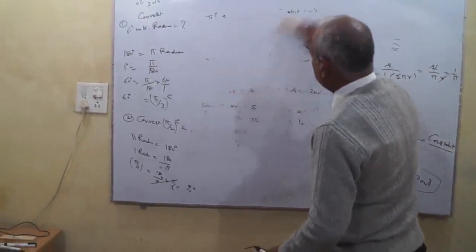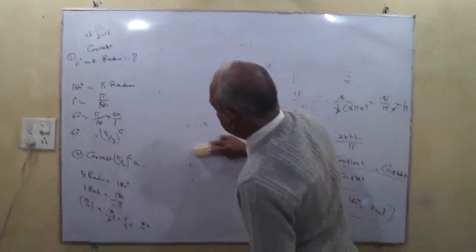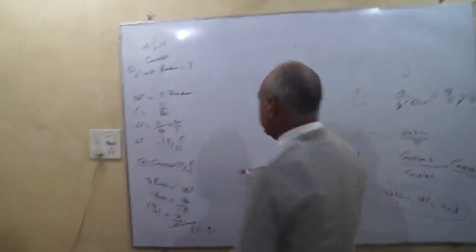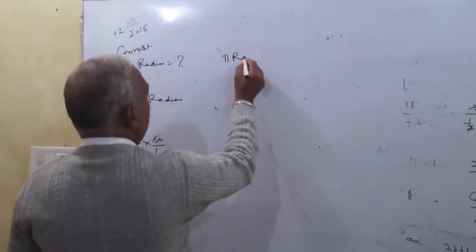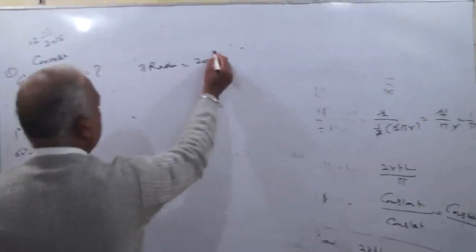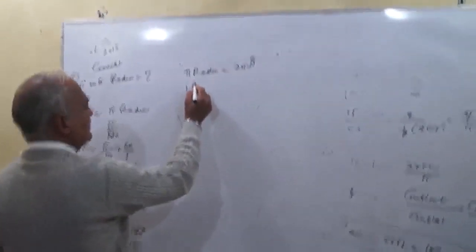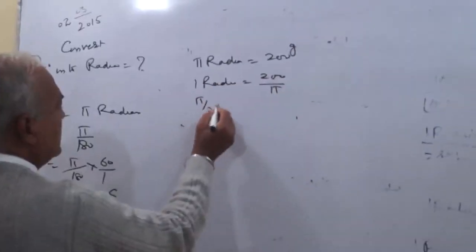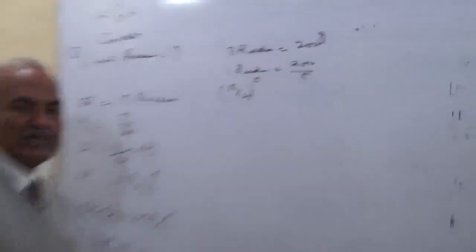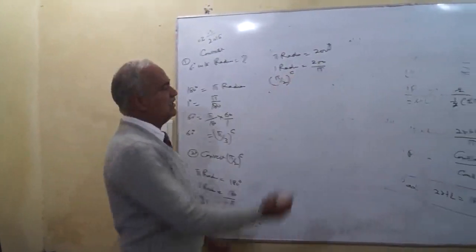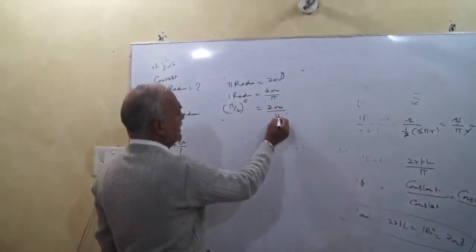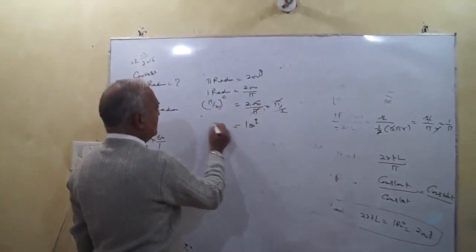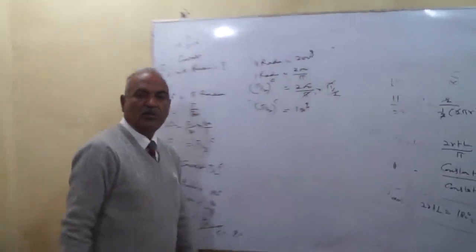Now convert pi by 2 into grade. We know pi radian equals 200 grade, so one radian equals 200 upon pi. For pi by 2 radian: 200 by pi, multiplied by pi by 2. Pi cancels with pi, and 200 divided by 2 gives 100 grade. So pi by 2 circular measure equals 100 grade.